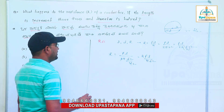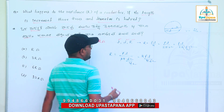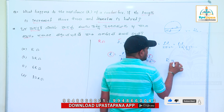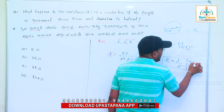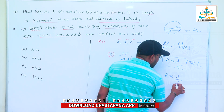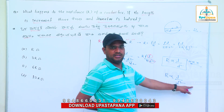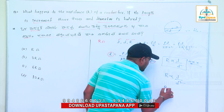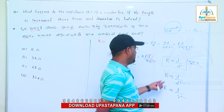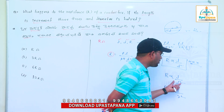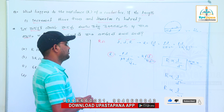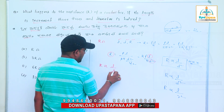The final formula shows R is directly proportional to L and inversely proportional to D squared. The parameters are resistance, length, and diameter. R is directly proportional to L and inversely proportional to the square of the diameter.